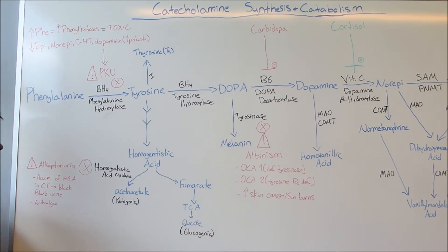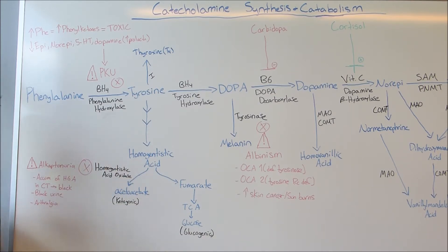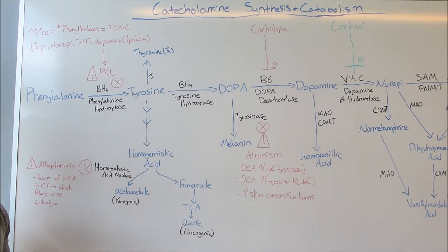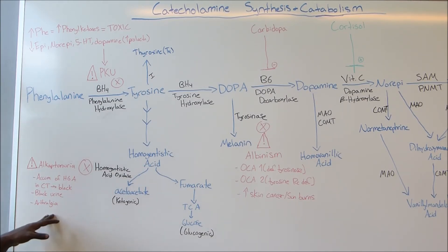The next pathology is alkaptonuria. With alkaptonuria, there's a deficiency in homogentisic acid oxidase. Because of this deficiency, there's an increase and buildup of homogentisic acid. This buildup occurs in connective tissue and can also be excreted into the urine. After urine has been exposed to air for a period of time, it will turn from yellow to black. The connective tissue where homogentisic acid builds up also turns black. Lastly, this can lead to very severe arthritis.